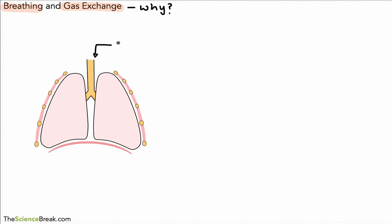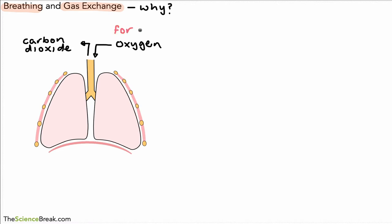We breathe so that oxygen can be brought into the body. But not only is oxygen brought in — we also remove carbon dioxide. Oxygen is really important because it's needed for something called respiration, and carbon dioxide is produced from respiration.